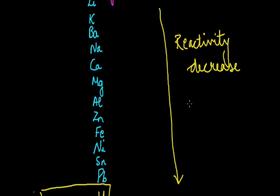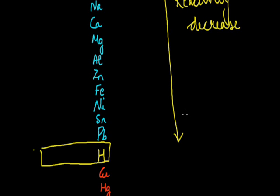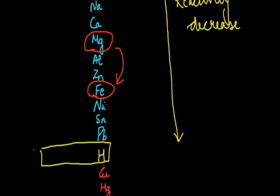For the metals placed above hydrogen, the metal which is higher in the series is more reactive than one below it. For example, taking the case of magnesium and iron — magnesium is placed above iron in the reactivity series, so magnesium is more reactive and iron is less reactive. Just by comparison, we can say which metal is more reactive than the other.